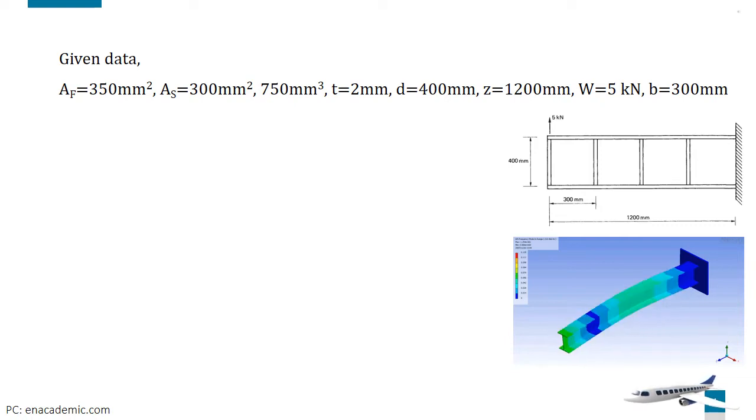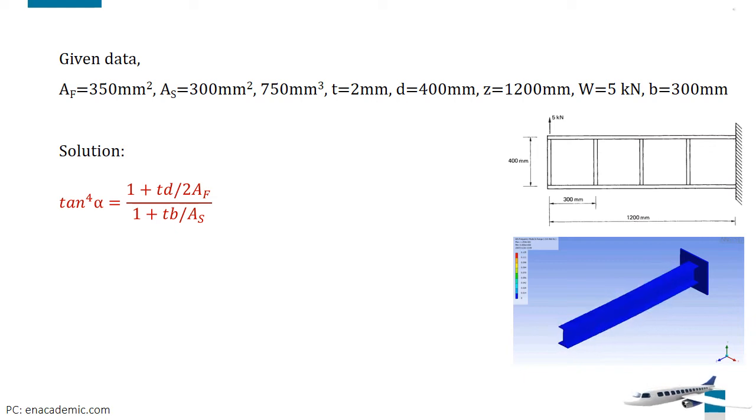Now, we have to find out the maximum stress in a flange. To find the maximum stress, we must know the angle of diagonal tension. From a consideration of the total strain energy of the beam, we can find out the angle.